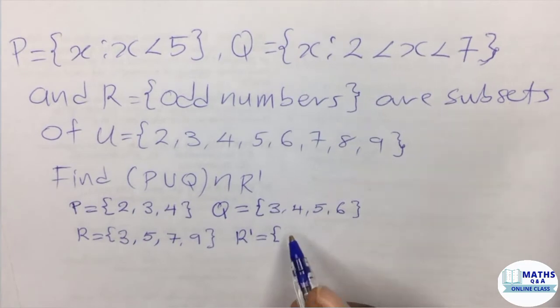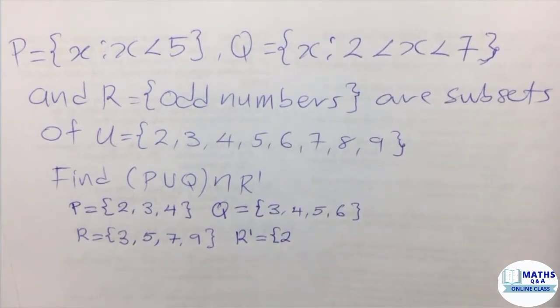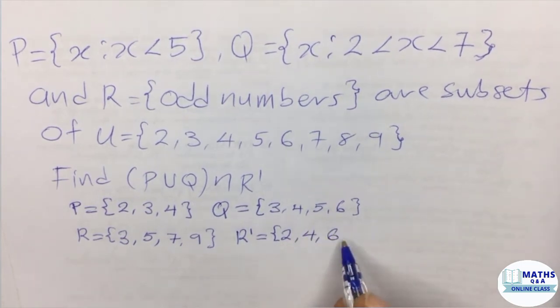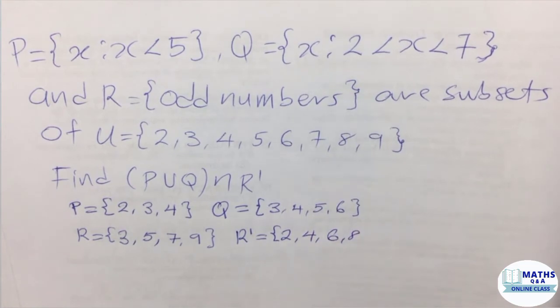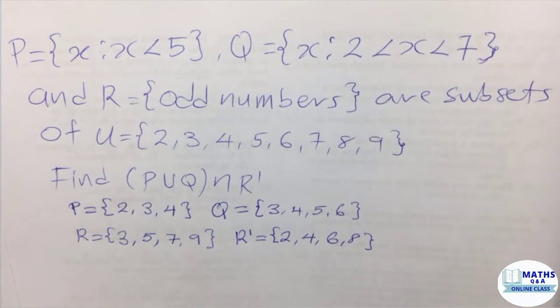You can see that 2 is not found in the set R, so it is part of the complement. 4 is also part, 6, 8.